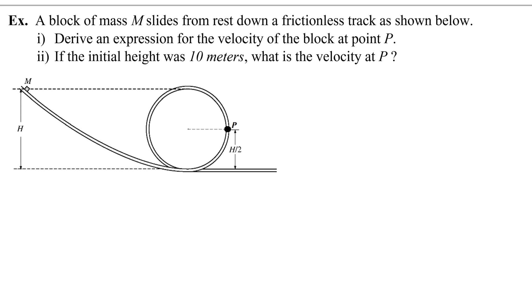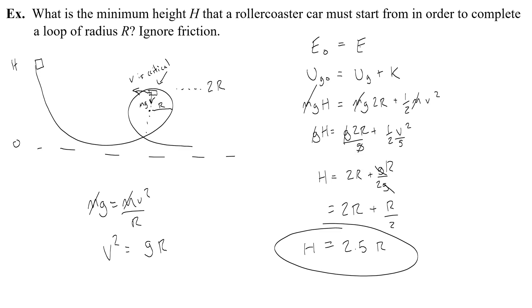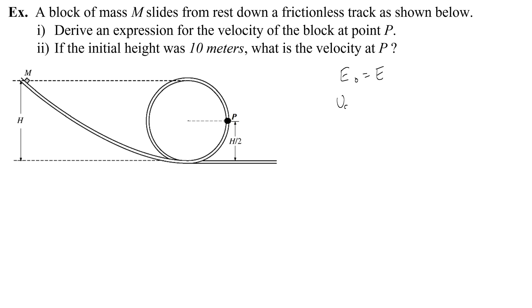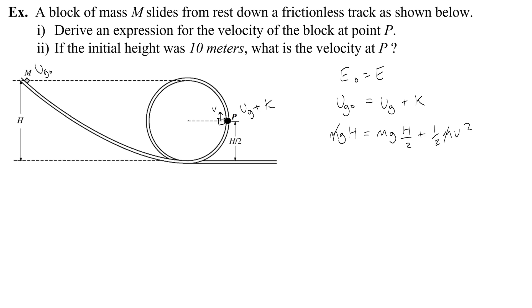Let's start by identifying the energies present. At first you have all potential energy, Ug. At the end you have potential energy and kinetic energy because the object is moving with a velocity up — Ug plus K. In the beginning I have mg times h as potential energy. At point p I have mg times h over 2, because the radius of the loop is half that height, then I add one-half mv-squared. Get rid of m.